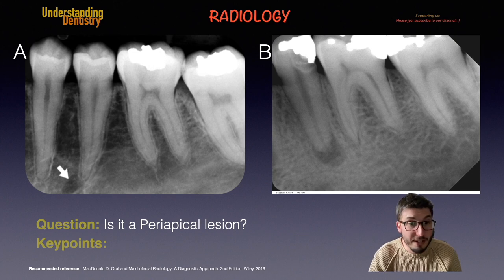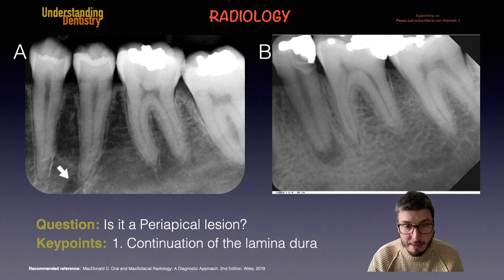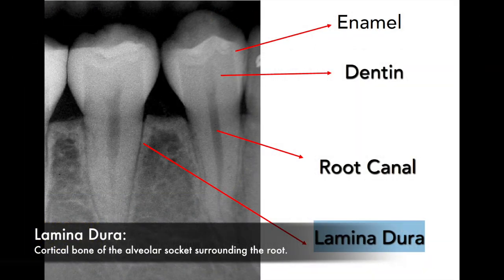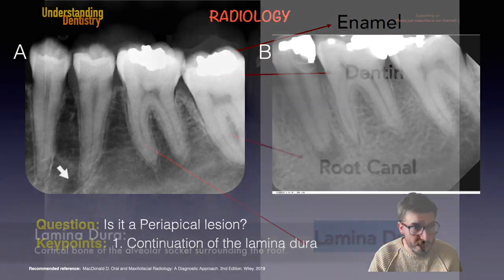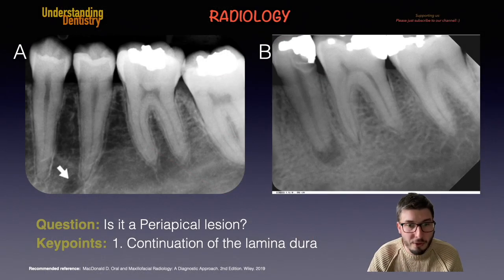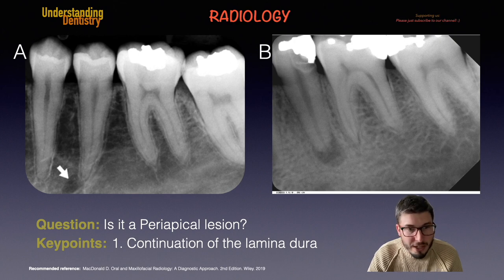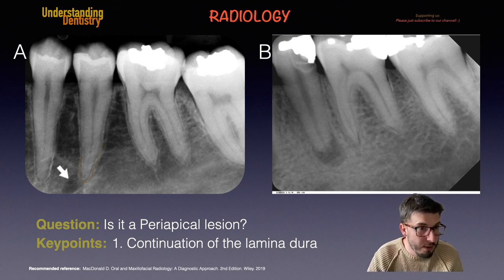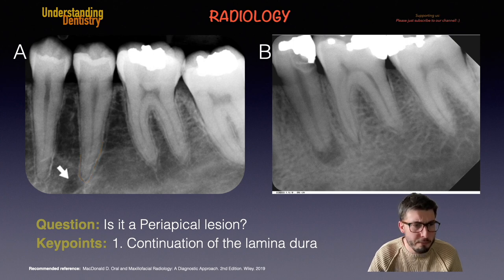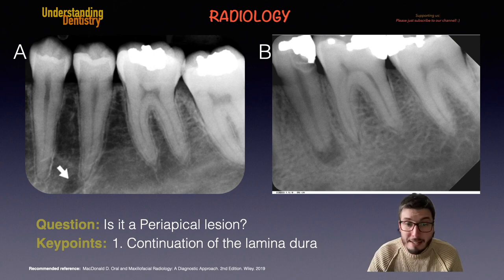Let's start with the first key point, which is the continuation of the lamina dura. We need to make sure that the lamina dura is surrounding the entire apex, because if it is, then it's not a periapical lesion. Looking at radiograph A on the left side of your screen, you can see a drawn line contouring the lamina dura. We can confirm that the lamina dura is surrounding the entire apex, which means the white arrow is not showing a periapical lesion.